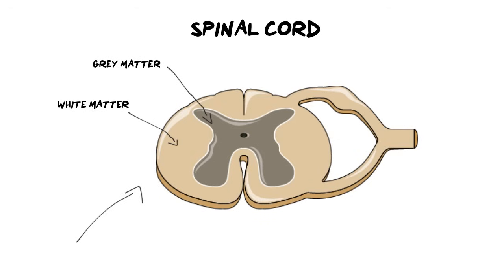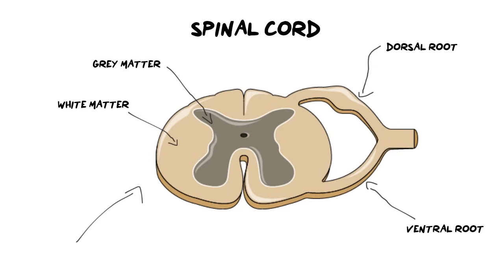You need to be able to label this diagram. The upper region with a slight bulge is called the dorsal root — dorsal meaning back, so it is the part closest to your skin or vertebral column. The opposite side is called the ventral root. The hole in the center is called the central canal, and it also contains some cerebrospinal fluid. The structure coming out of the spinal cord is the spinal nerve.